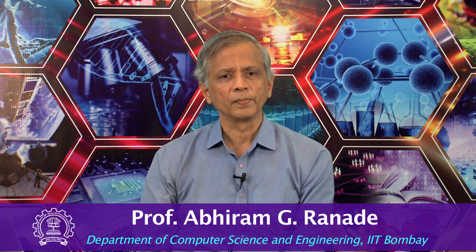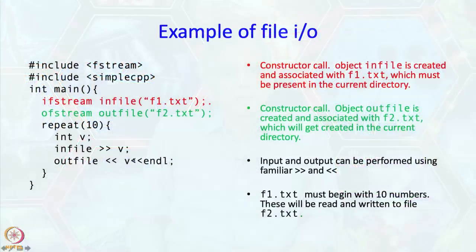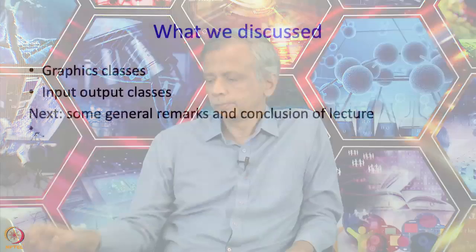There are some additional details you might want to know, like how do I append to a file — that is discussed in the book, but we are not going to discuss it in this lecture. So this program is going to read 10 numbers from in_file and create a new file f2.txt and put those numbers inside that file. This is of course trivial processing of files, but now you should be able to write programs which take data from files and put data into files, not only take data from the keyboard and put data onto the screen.